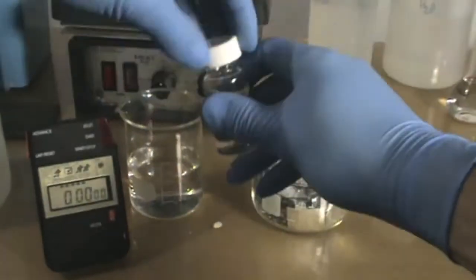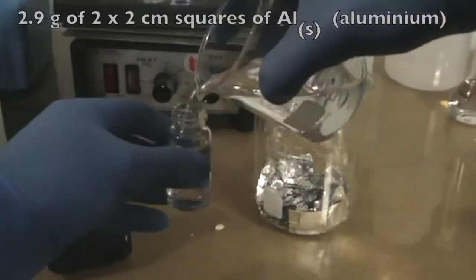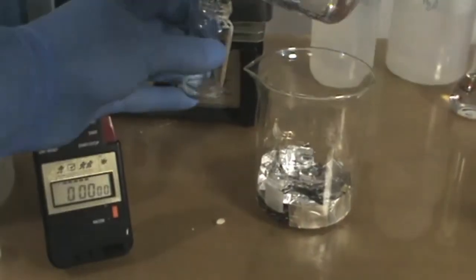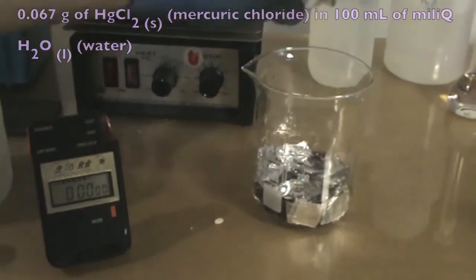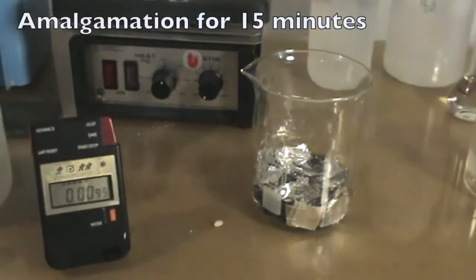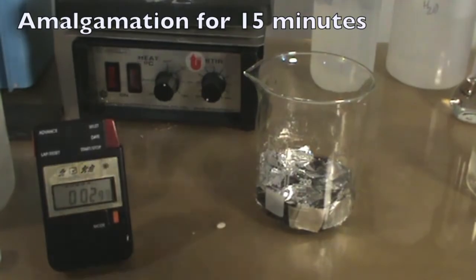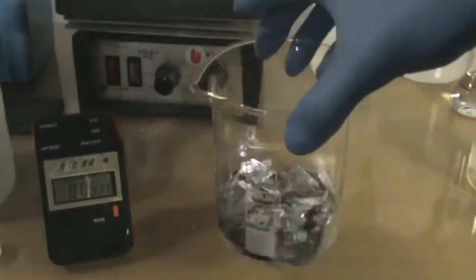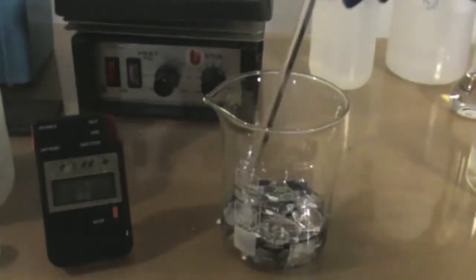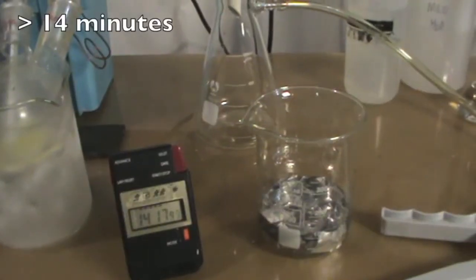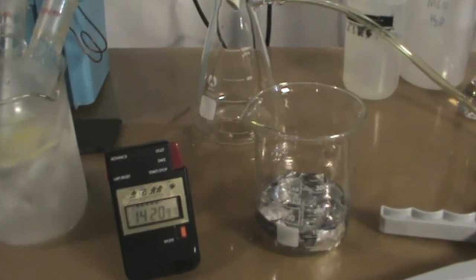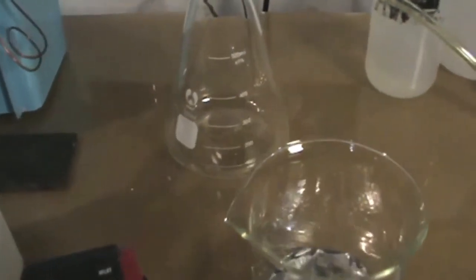After that, get the 2.9 grams of aluminum foil we cut in 2 x 2 cm squares and add it into the solution of mercury chloride we made. The amalgamation was allowed to proceed for 15 minutes. After 14 minutes, we can clearly see the surface of the aluminum has been modified to form an aluminum amalgam by the mercury chloride solution.